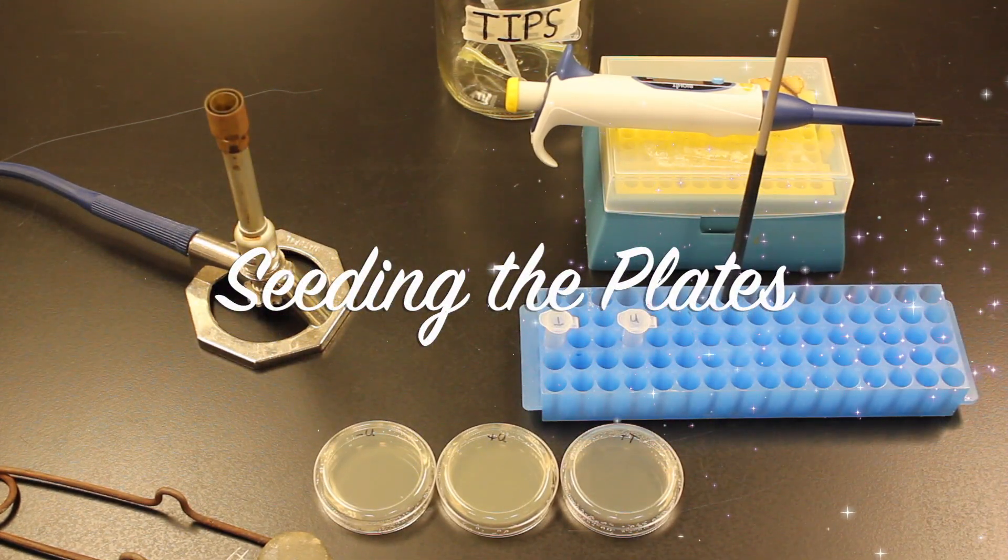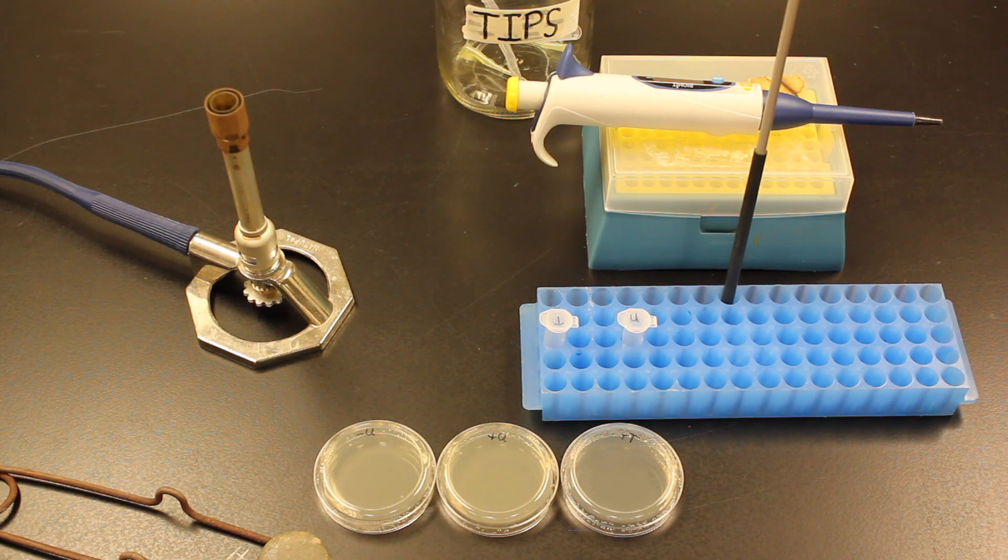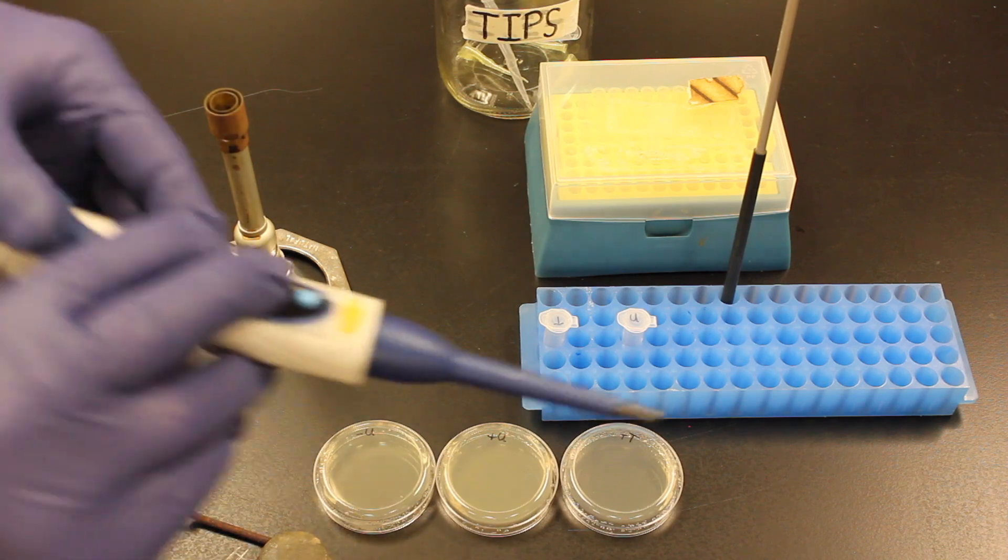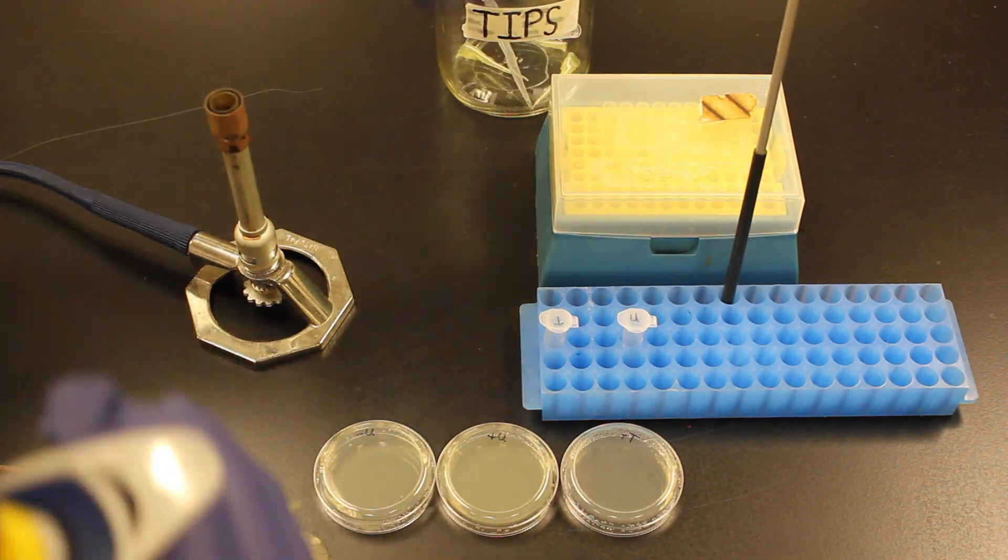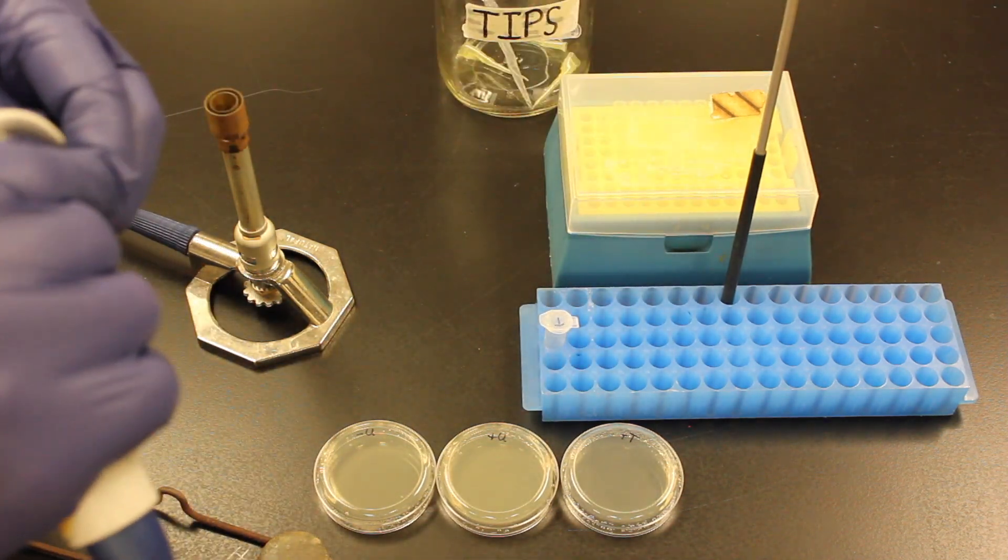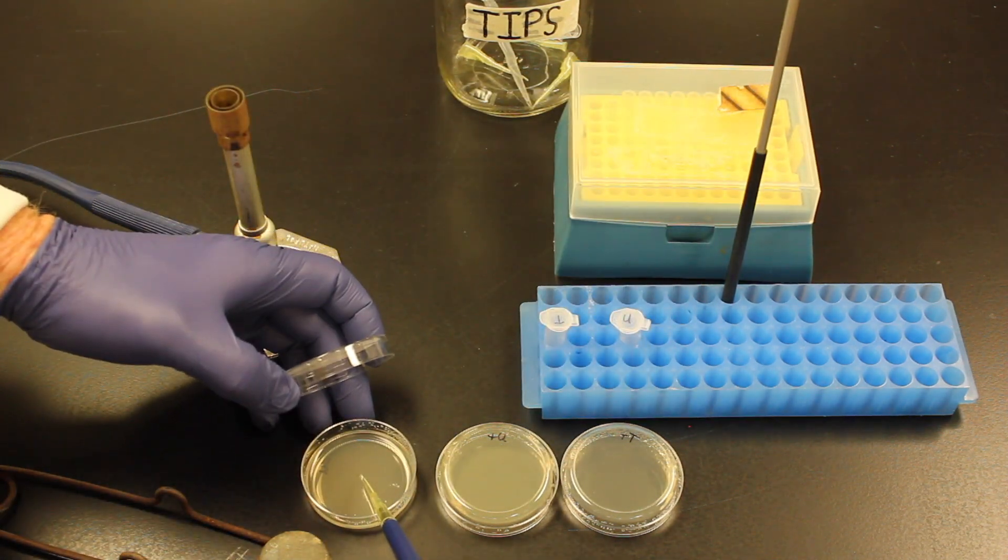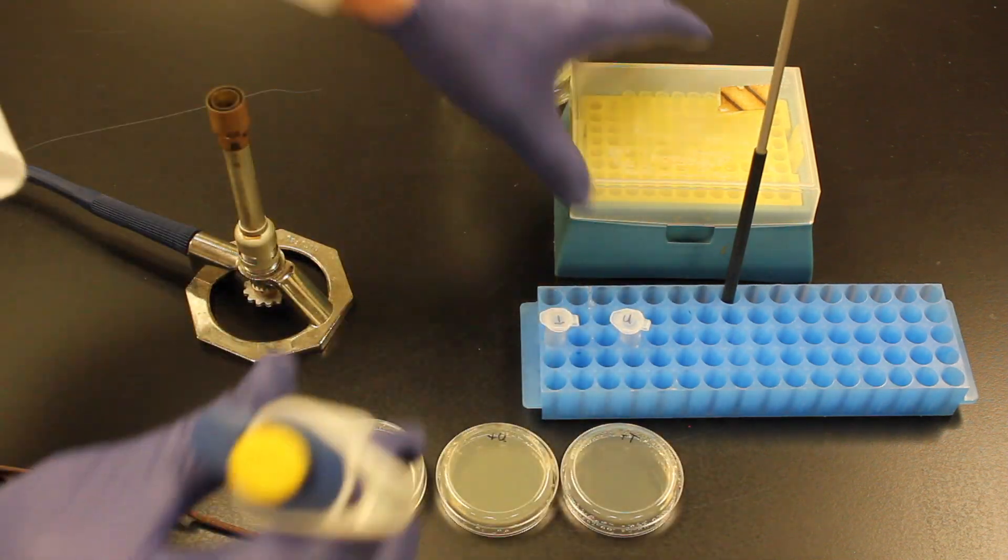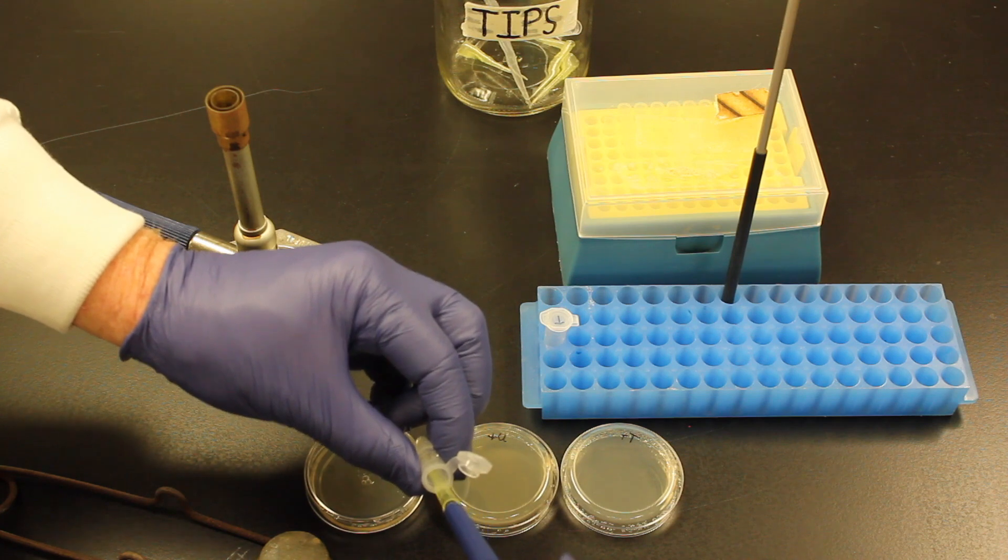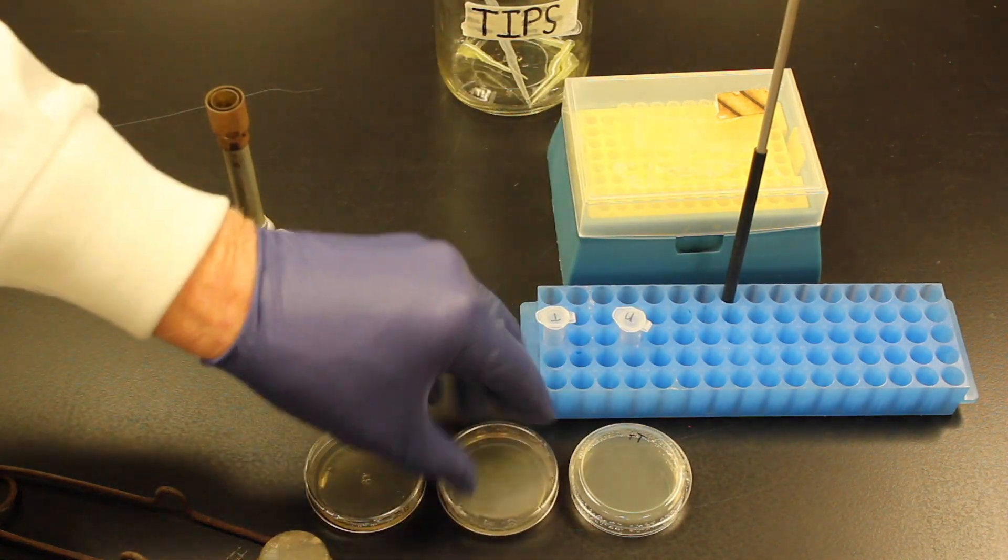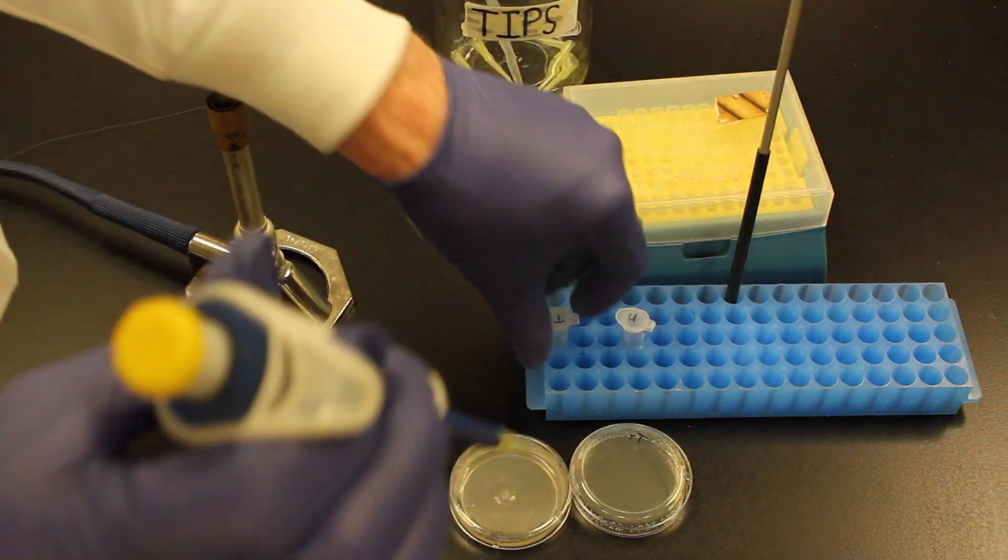So 15 minutes have passed. I'm now ready to inoculate my plates with my transformed and untransformed bacteria. So what I'm going to do is I need a pipetter and a pipette tip. This is set to 50 microliters. I will get a pipette tip. Then I will get 50 microliters of my untransformed. We will put that into our untransformed plate. I will get 50 microliters of my untransformed again. Then I will put it into the other untransformed plate. Then I will get 50 microliters of my transformed.